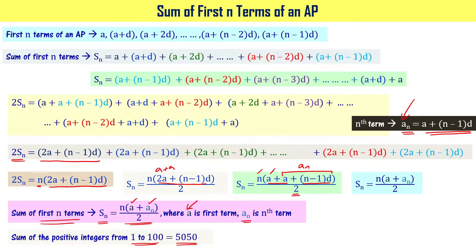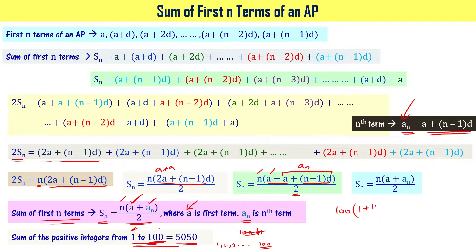Applying the formula to the earlier problem: the sum of the first 100 positive integers has n equals 100, first term a equals 1, and nth term an equals 100. So S equals 100 times (1 plus 100) divided by 2 equals 100 times 101 divided by 2 equals 50 times 101 equals 5050.